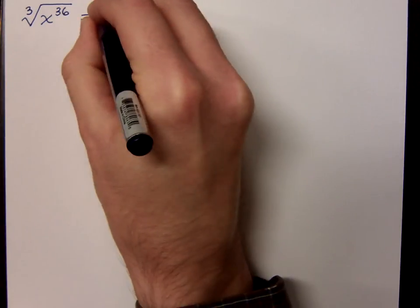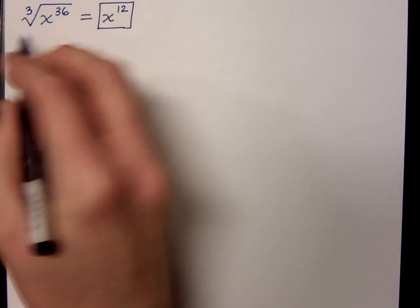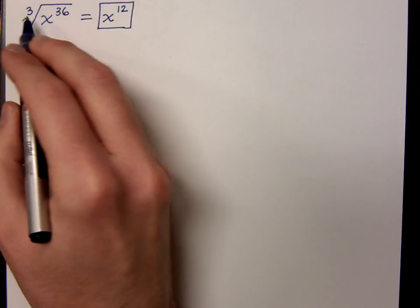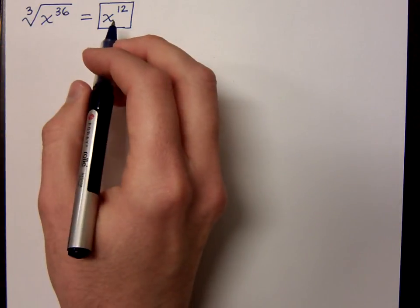Remember, the trick is that you divide the exponent by the index. So 36 divided by 3 is 12. Do you agree?